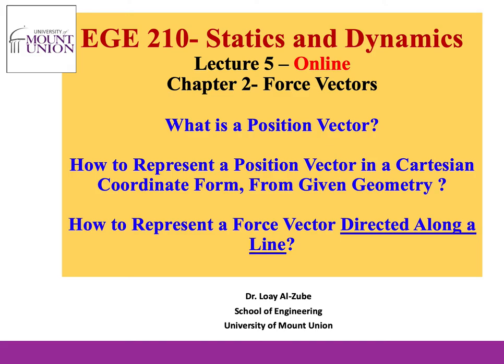Finally we will learn how to represent the force vector directed along a line. Keep in mind that we have two things: a force vector, and that vector — in order for the force to be represented as a vector — needs a magnitude and a direction. We use the position vector to identify the direction of the force vector. So keep in mind these two things: force vectors and position vectors, and how those two are related.